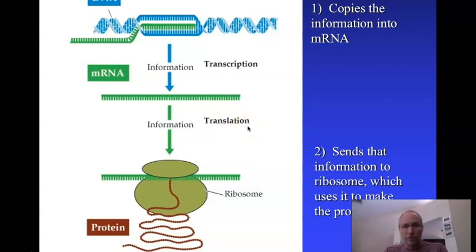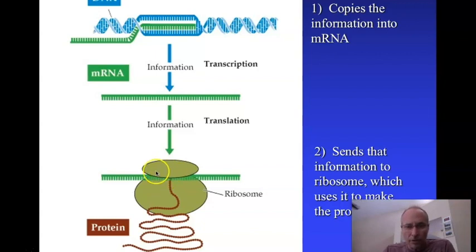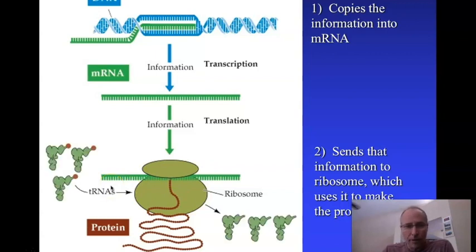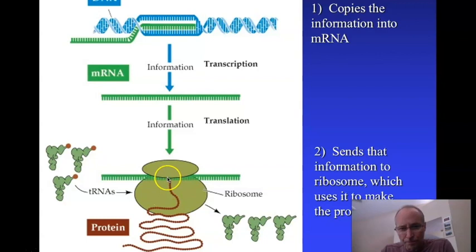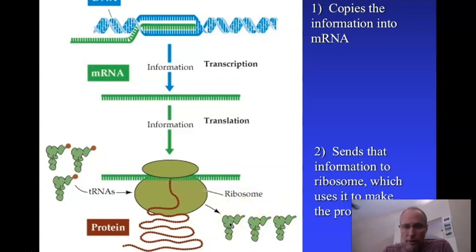The last step is bringing the proper amino acids into the ribosome at the right time so it can do the translation step. The objects that do that are transfer RNAs. Transfer RNAs carry amino acids and are brought into the ribosome, which takes the amino acid off, puts it into the growing chain, and releases them as uncharged transfer RNAs — they no longer have an amino acid.